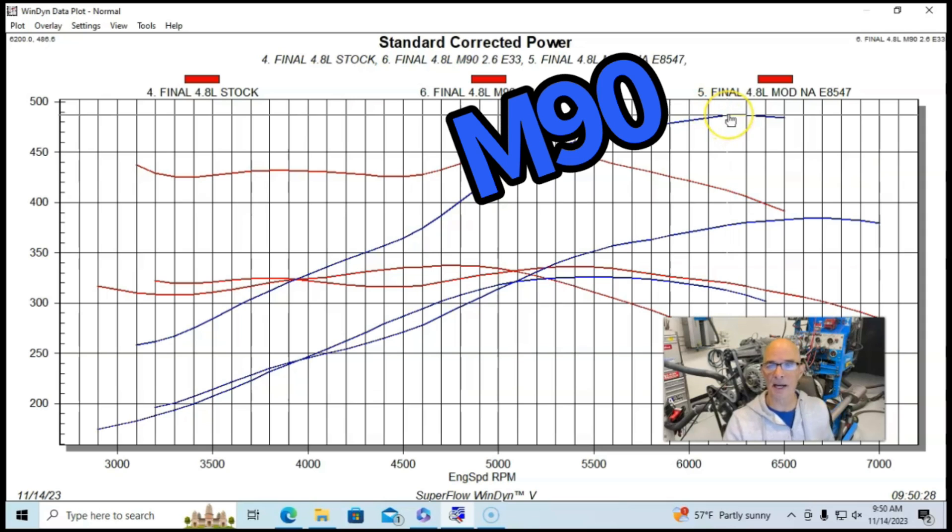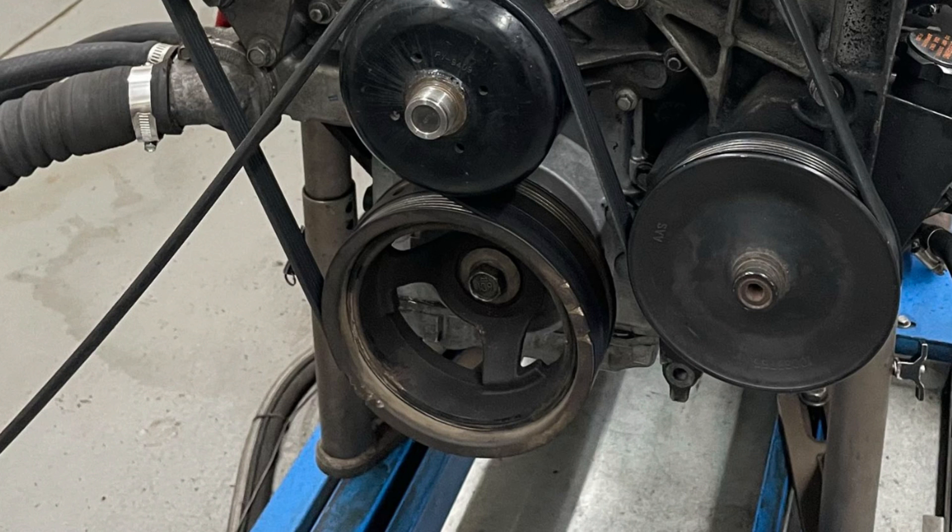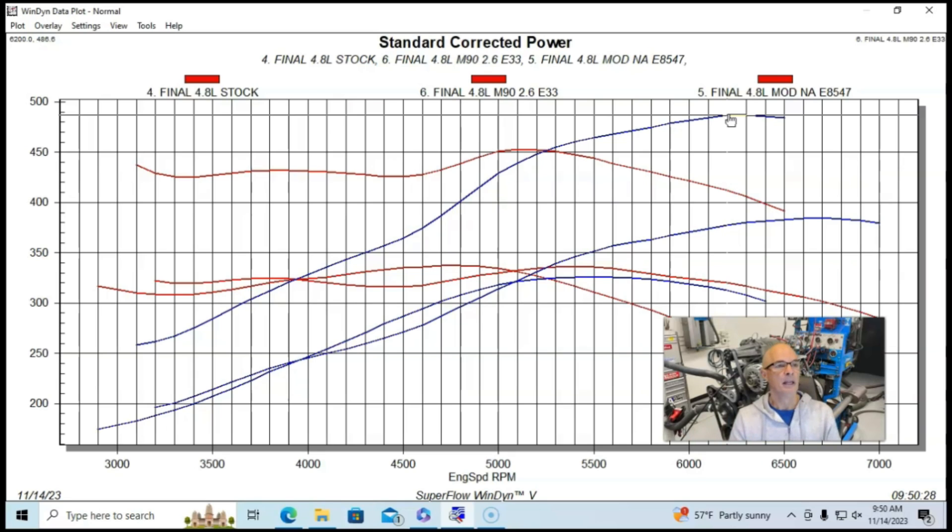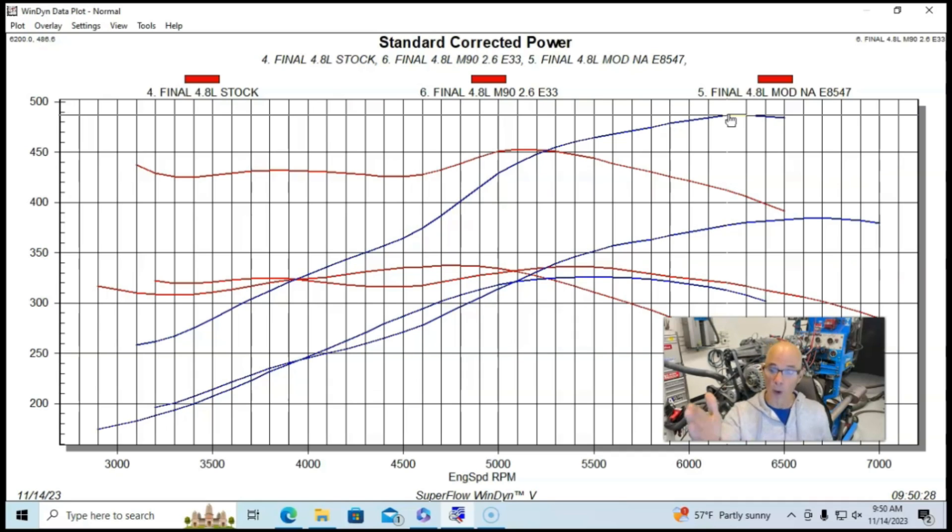We put the M90 on it with a 2.6 inch pulley. It should be noted that the stock truck damper, basically the lower crank pulley, is bigger than the one used on the 3800. It's about a half inch bigger, so we actually have more blower speed despite the fact that we have the same blower pulley on there.